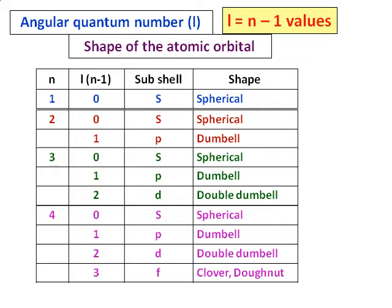For n = 3, there are three values for l, giving subshells s, p, and d, with shapes spherical, dumbbell, and double dumbbell. And n = 4 gives four values of l — 0, 1, 2, and 3 — with symbols s, p, d, and f, having shapes spherical, dumbbell, double dumbbell, and clover or donut.